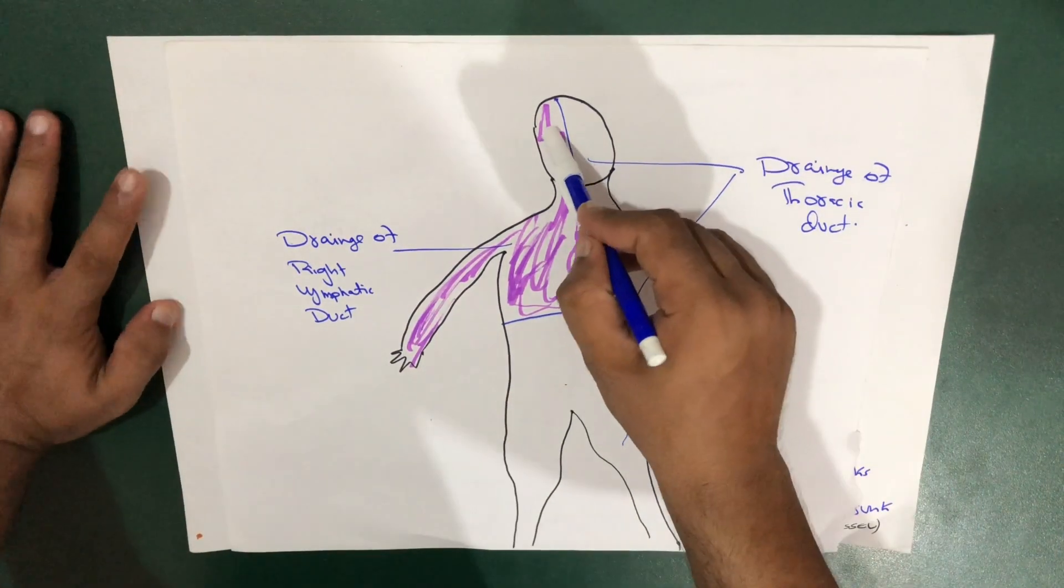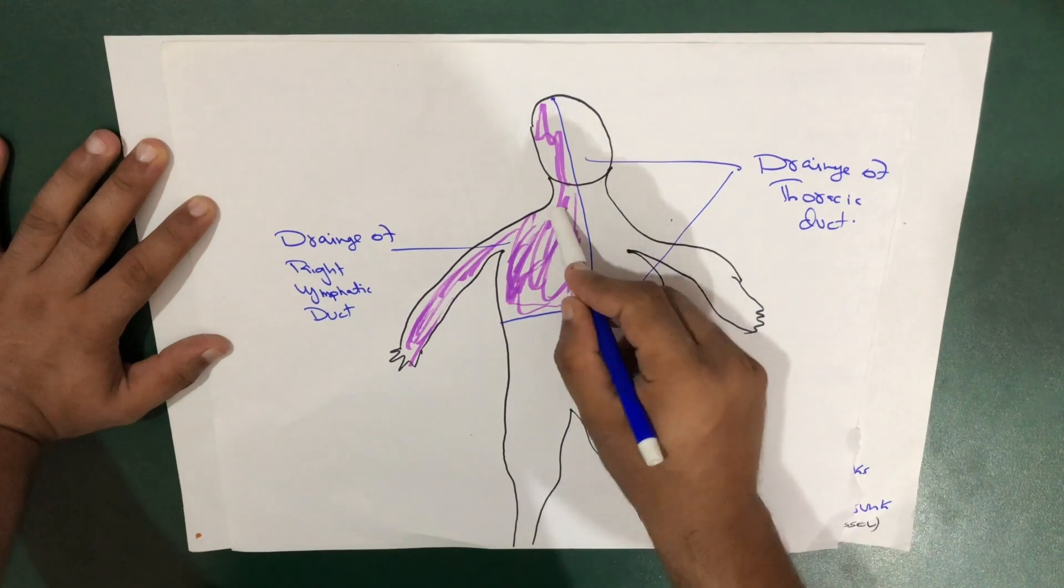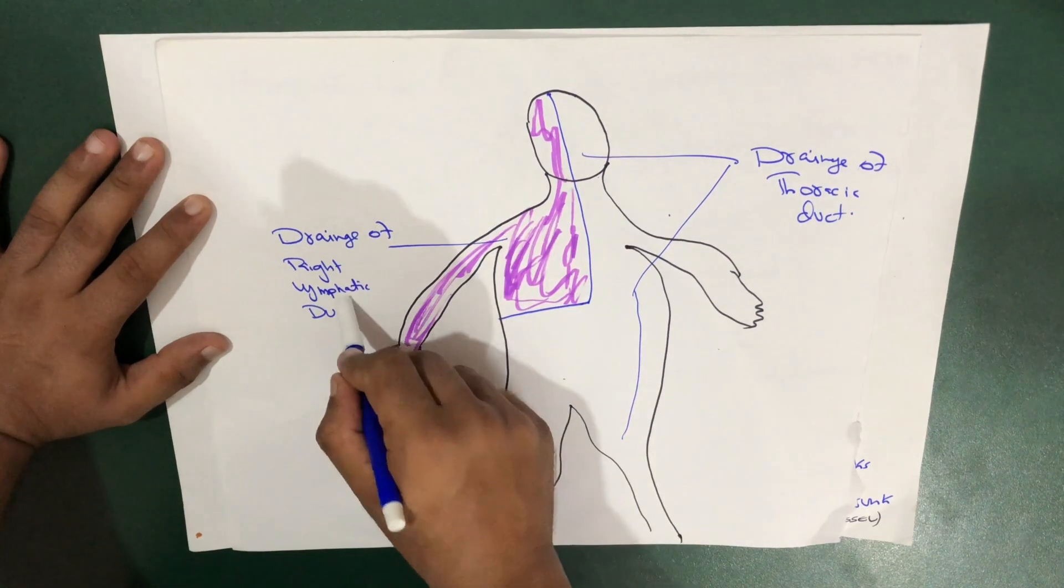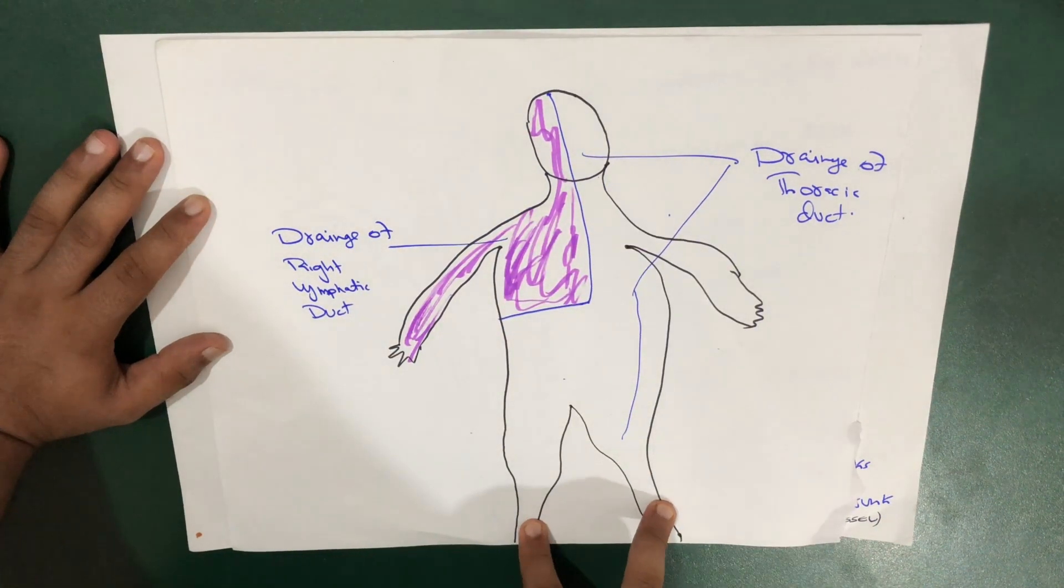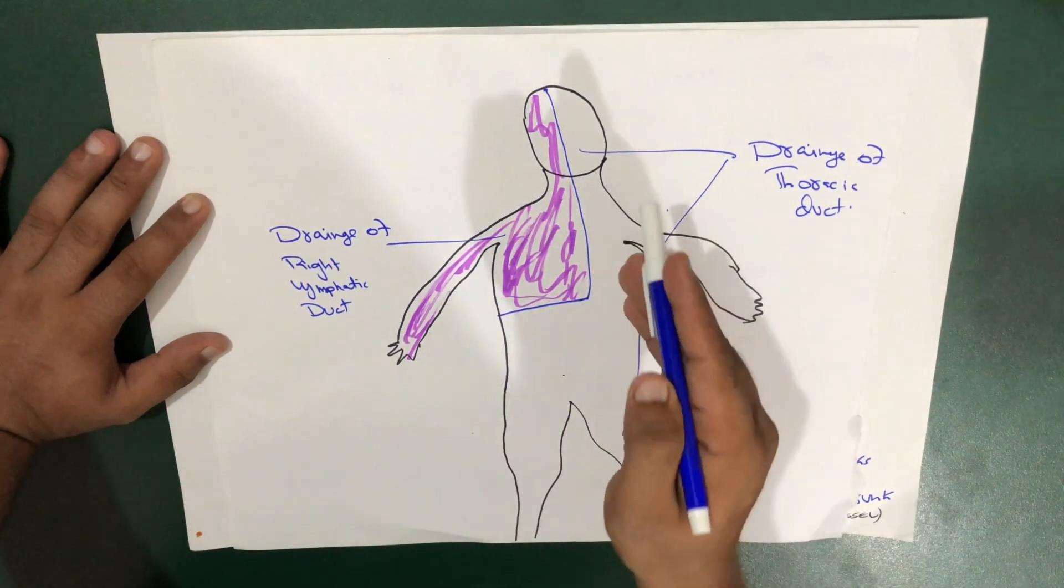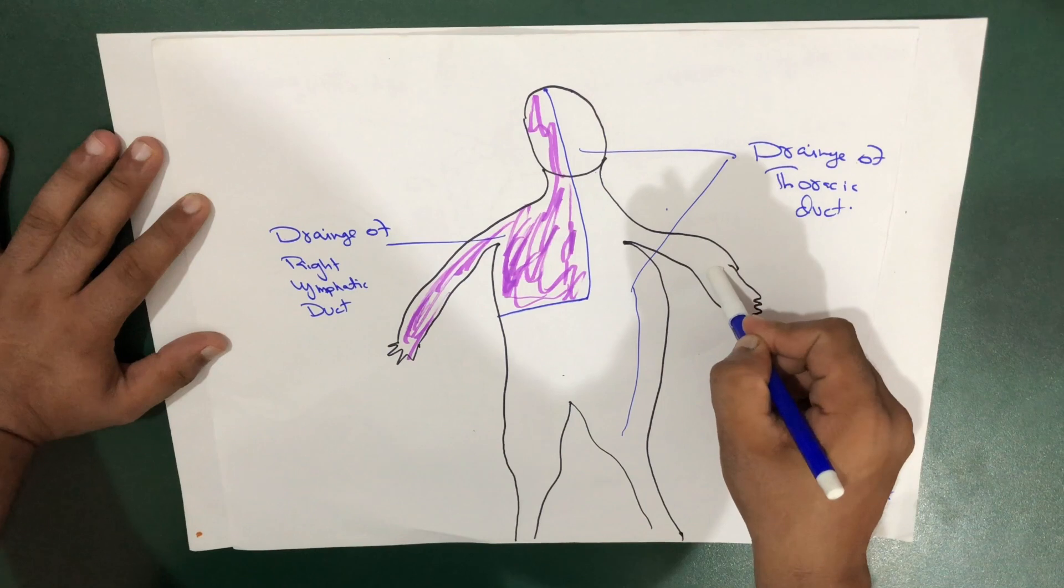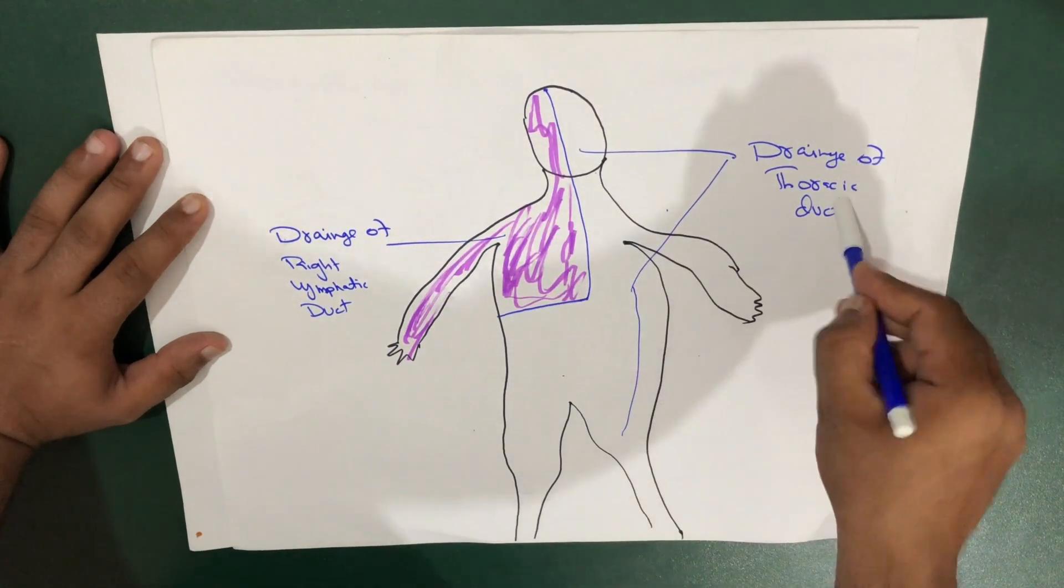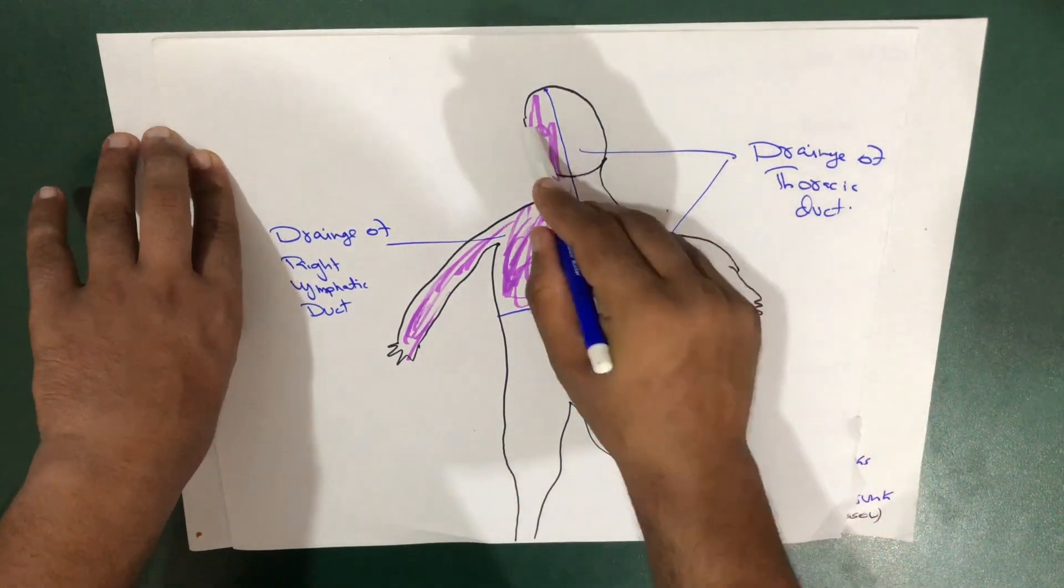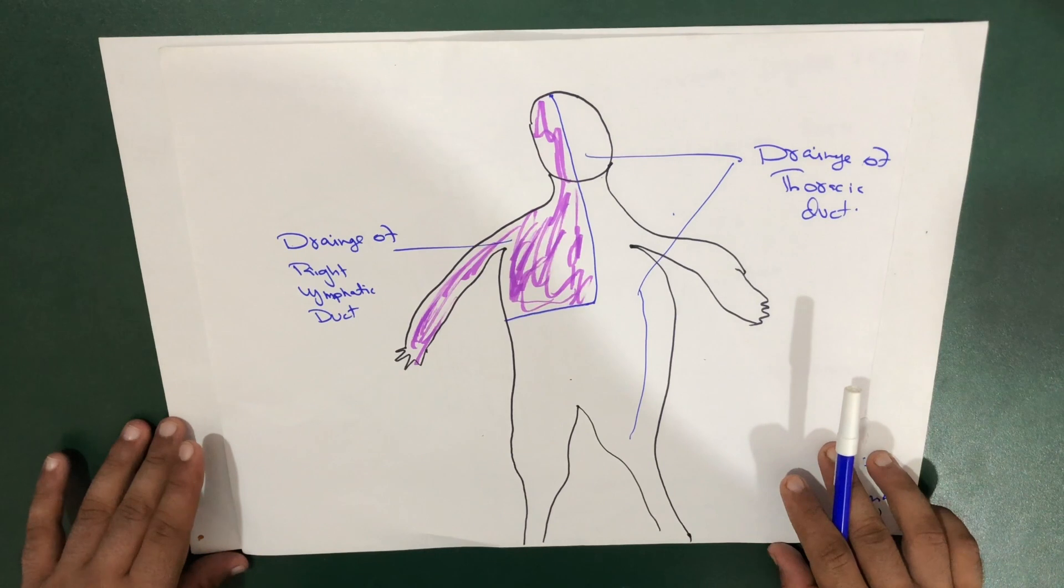This area shown here—the right upper limb, breast area, and right side of head and neck—is not supplied by the thoracic duct but by the right lymphatic duct. The two lower limbs, lower abdomen, left thorax, left upper limb, and left head and neck are all supplied by the thoracic duct.